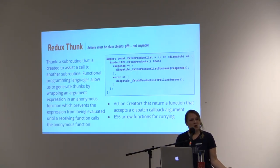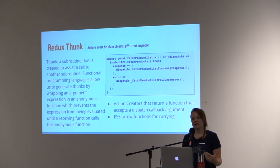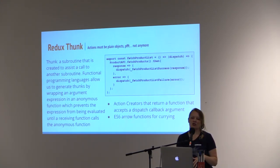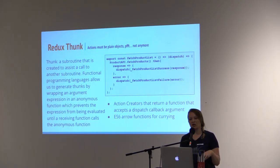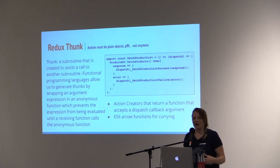Remember how actions are supposed to be plain objects? Not anymore! A thunk is a subroutine that is created to assist a call to another subroutine. Functional programming languages allow us to generate thunks by wrapping an argument expression in an anonymous function, which prevents the expression from being evaluated until the receiving function calls the anonymous function. Don't worry — hopefully you'll start to see why we like thunks here soon.